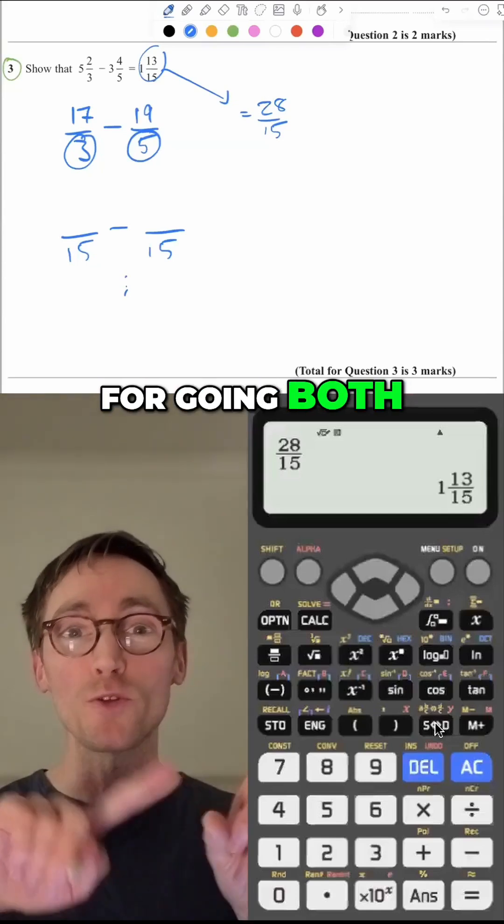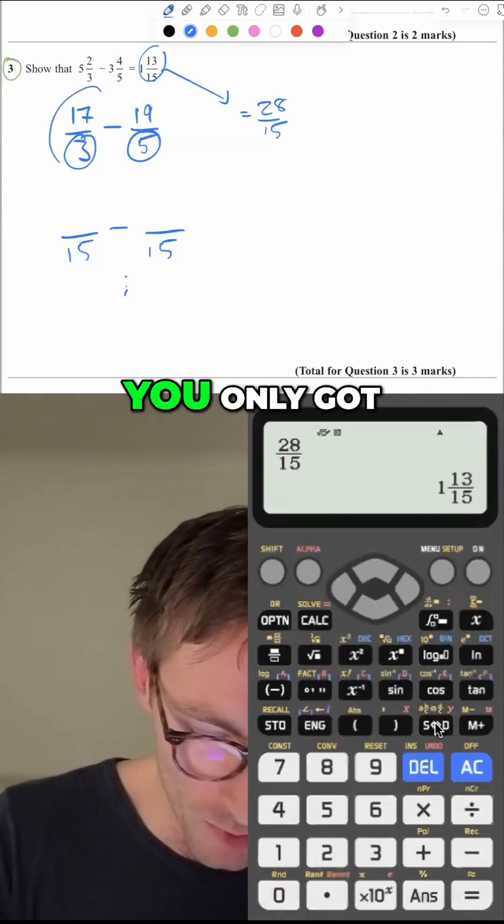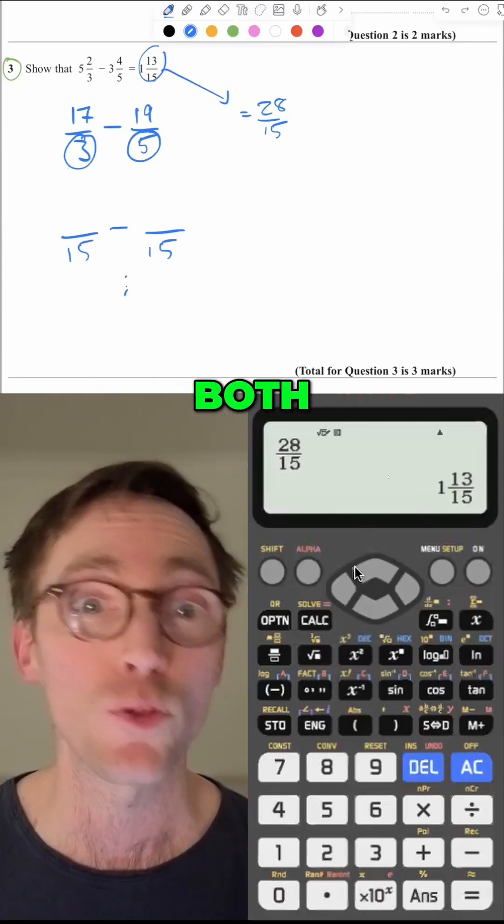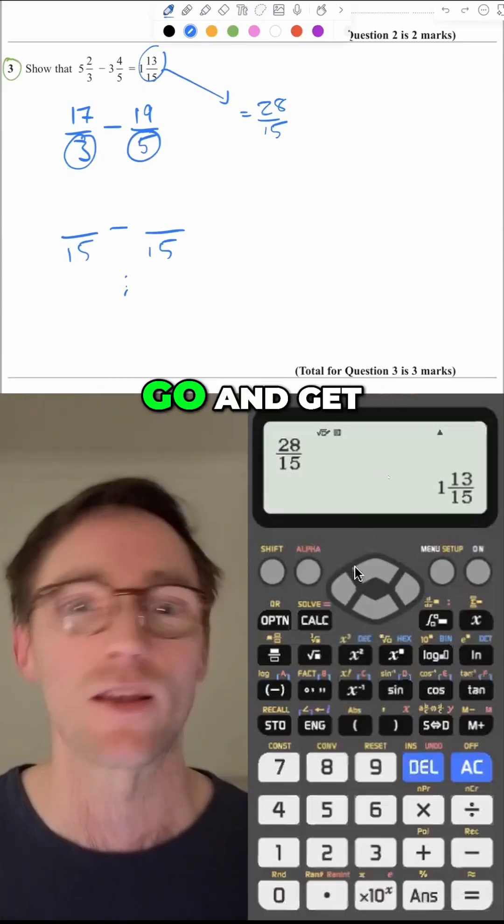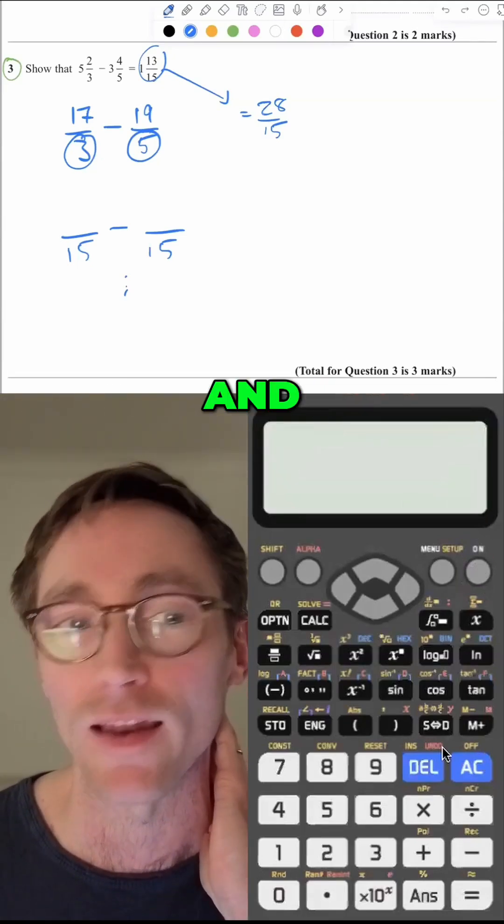Now you get marks for going both ways depending on the question. So in this particular question, the calculator hack, you only got it for that. But there's loads of mixed number fractions where if you know how to go both ways on your calculator, go and get loads of marks for free on your GCSEs and thank me later.